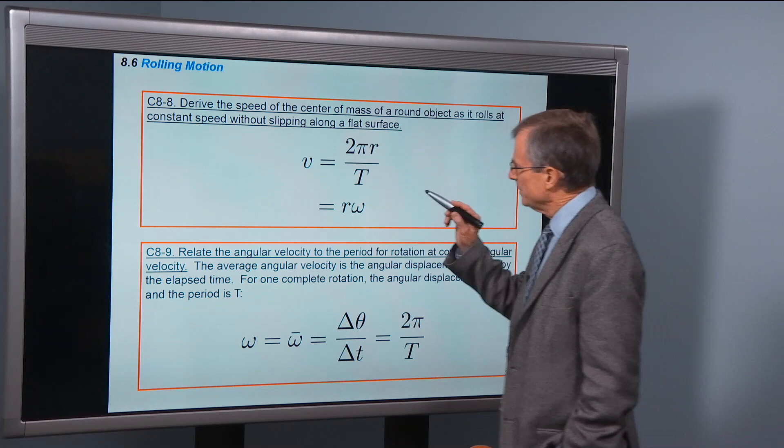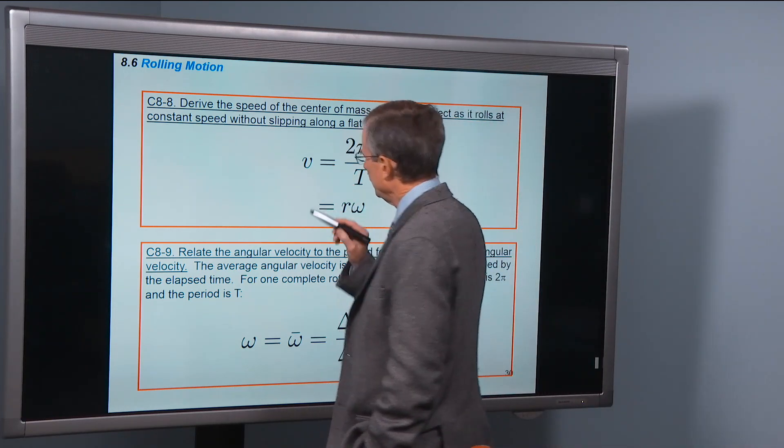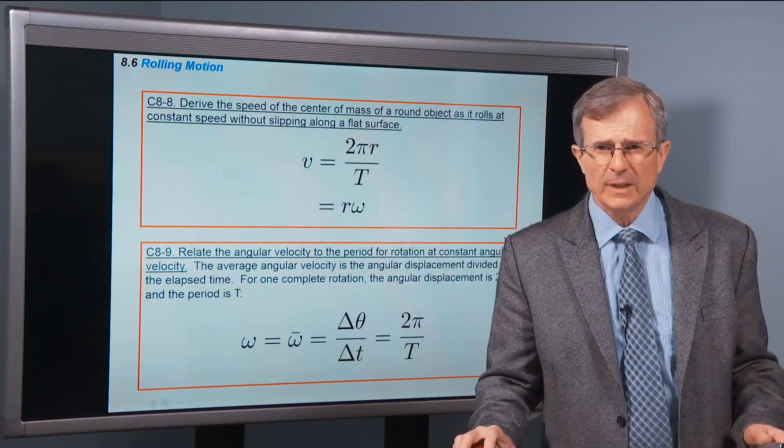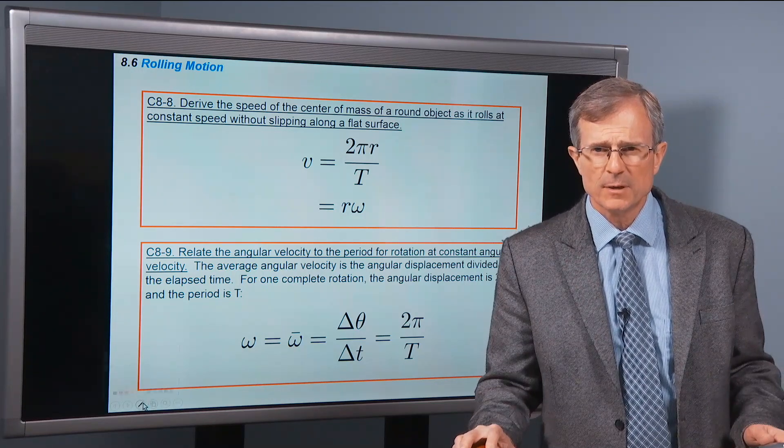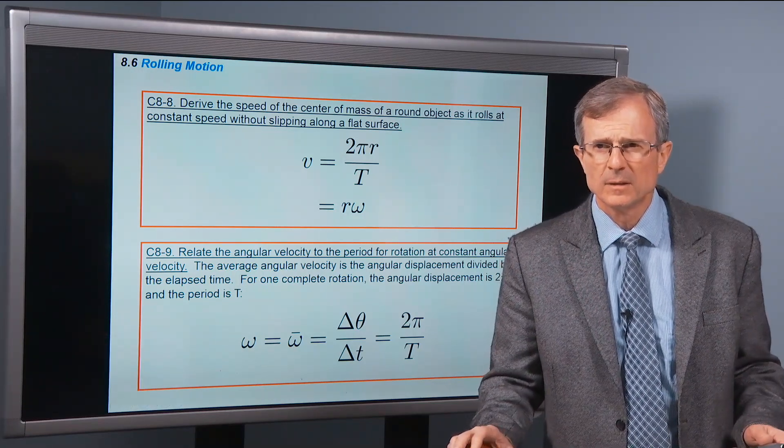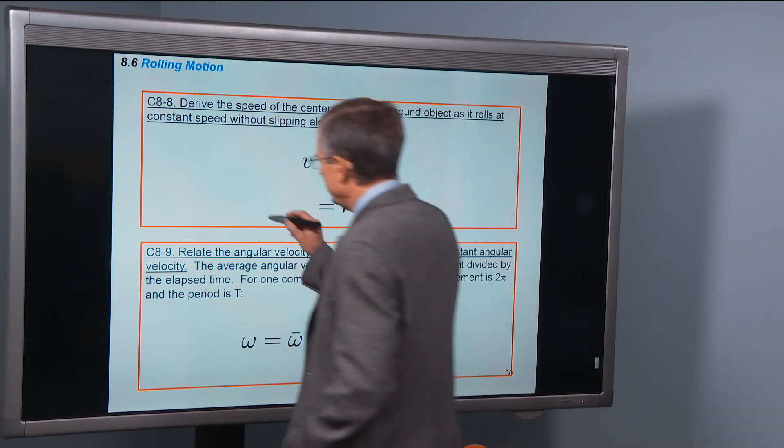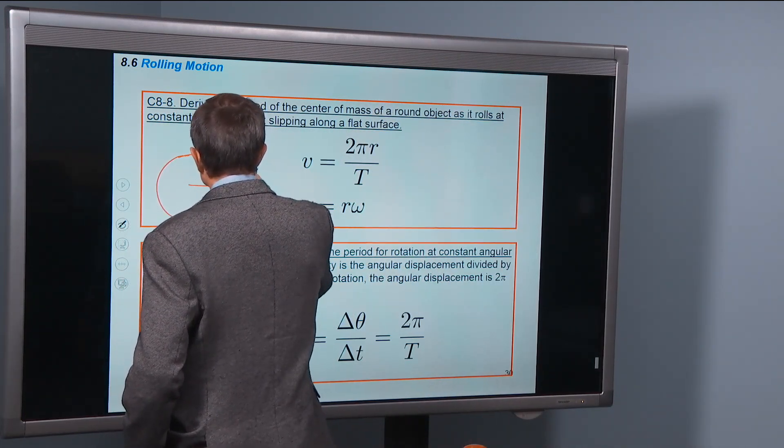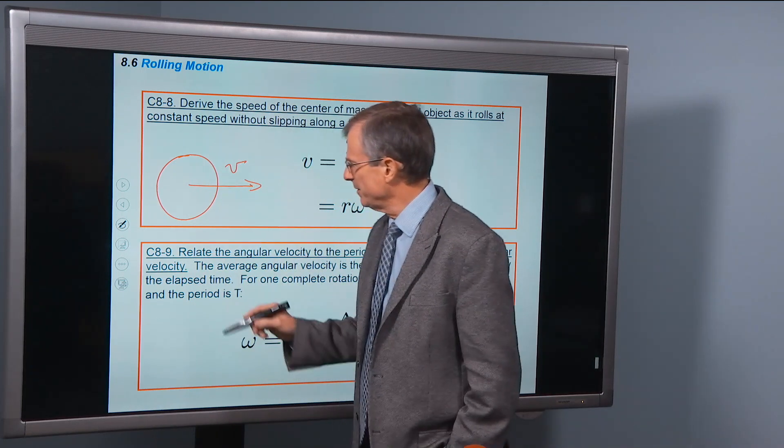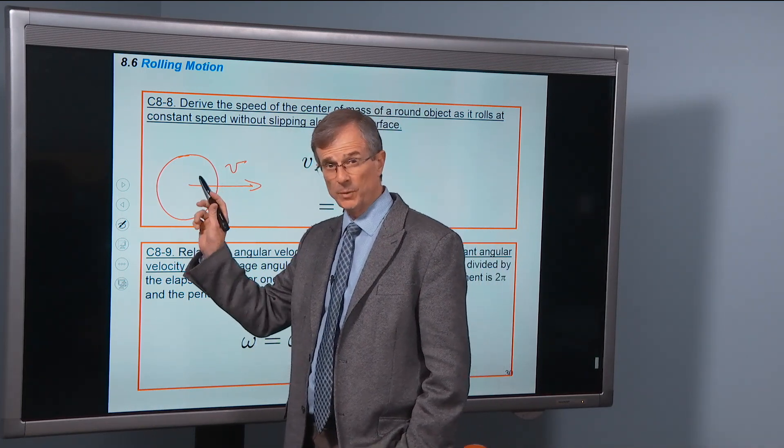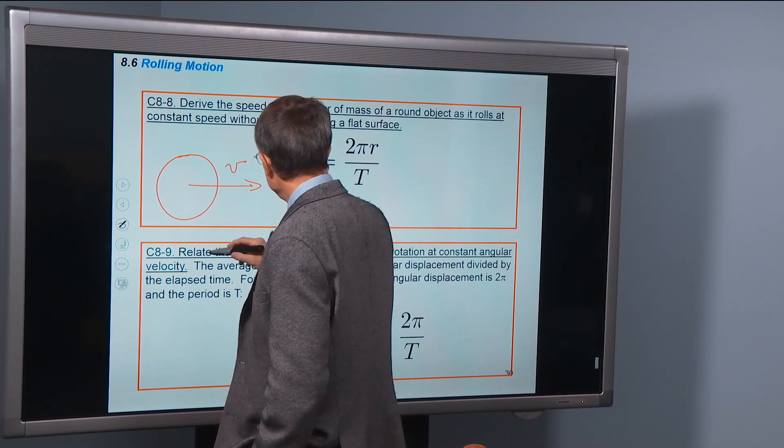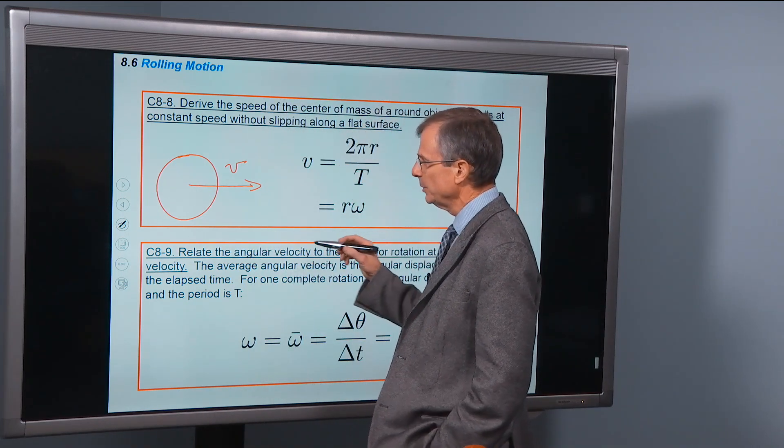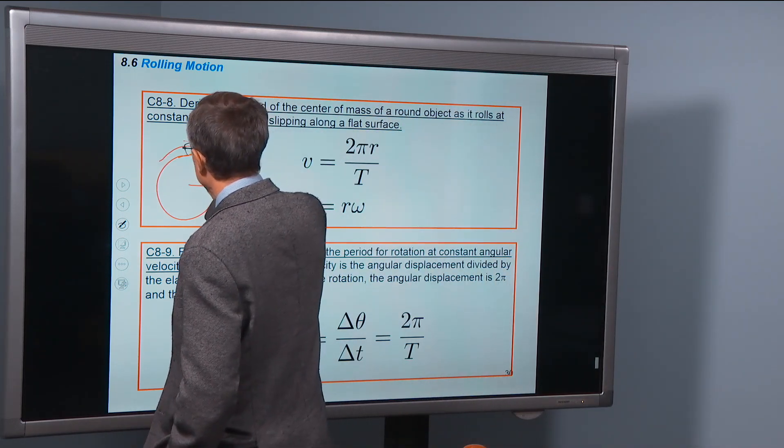So this is the speed that we're looking for - V, the speed of the center of mass. So what we're talking about here is the speed of that axle for the wheel related to the angular speed that it's turning at.